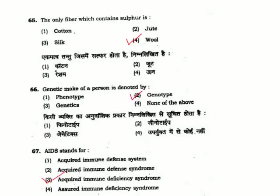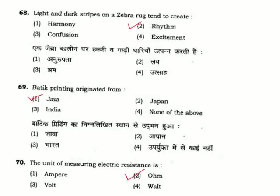Question 66: Genetic makeup of a person is denoted by — genes are called genotype. Option 2. Question 67: AIDS stands for — Acquired Immuno Deficiency Syndrome. Correct answer is Option 3. Question 68: Light and dark stripes on a Zebra rug tend to create — light and dark stripes create a rhythm. Correct answer is Option 2.